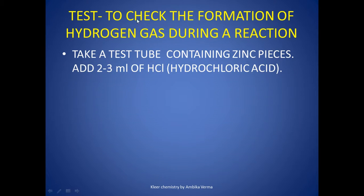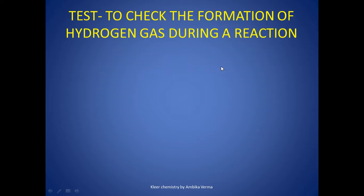So what are the steps? First, take a test tube containing zinc pieces, which is a metal, and add 2–3 ml of hydrochloric acid, which is a laboratory acid. We will take zinc in a test tube and pour hydrochloric acid into it.